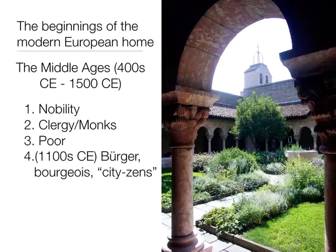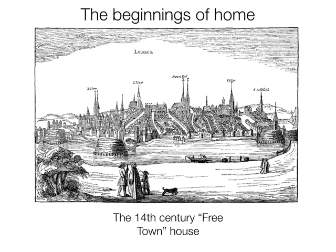We find it with this fourth class — the burgers, the bourgeoisie, the citizens. These figures arise only in these free towns: new urban agglomerations that emerge in the Middle Ages in Europe. They are a collection of merchants and craftspeople who cobble together enough money to buy the right to form a city — buying the charter from the king or noble authority.